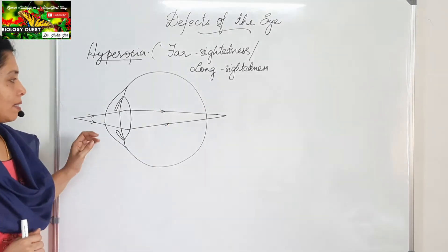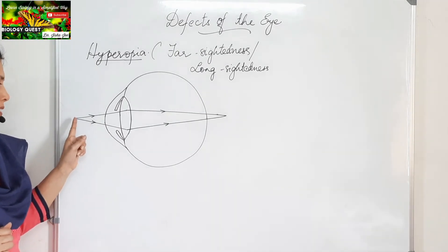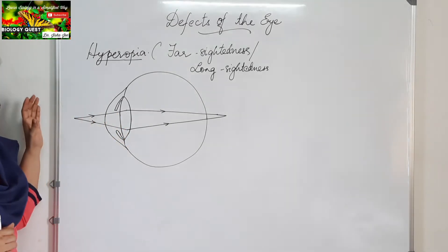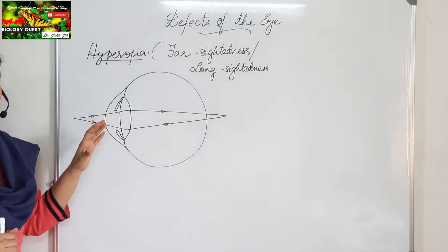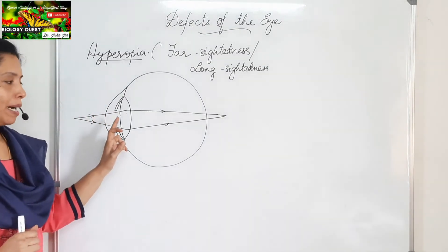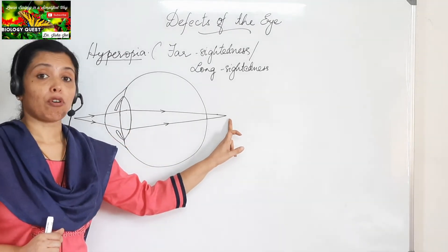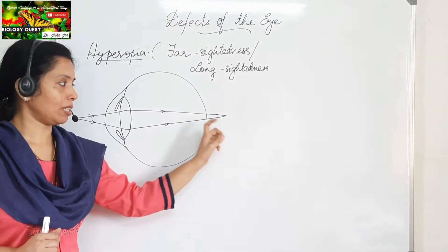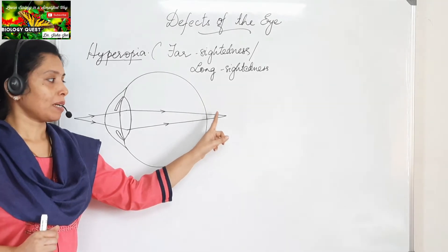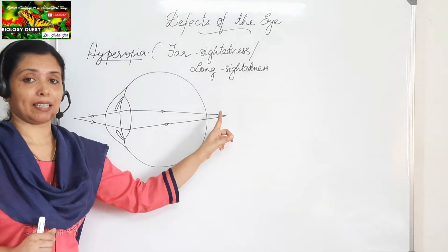In the diagram, you can see the light rays are coming from a nearby object — that is why the rays are not parallel. If coming from a distant object, we draw them as parallel lines. Here, the light rays are coming from a nearby object, and the image is being formed behind the retina. It has to fall on the retina to get clear vision, but in this case the image falls behind the retina.